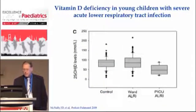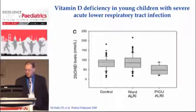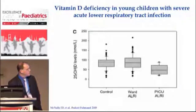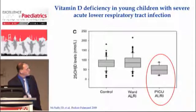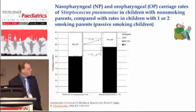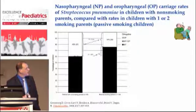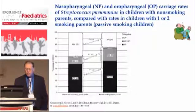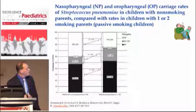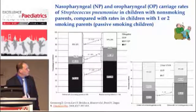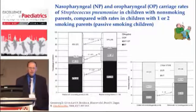Just one example: these are children admitted to the hospital with a lower respiratory tract infection or to the intensive care unit. The level of vitamin D was significantly lower in children admitted to an ICU compared to other groups. We also did a study looking at passive smoking exposure in children and carriage of pneumococcus. Children exposed to passive smoking had significantly higher carriage of Streptococcus pneumoniae in their nasopharynx and oropharynx than children not exposed to smoking. When we looked at the serotypes, they carried more serotypes included in the seven-valent vaccine.